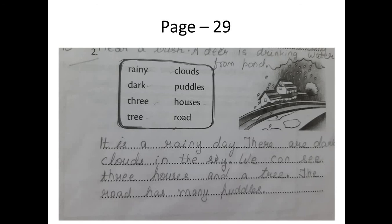Now see the second picture carefully. The options given are: rainy, dark, tree, clouds, puddles, houses, and roof. When doing picture compositions and these words are not given to you, always write down the words that come to your mind when you see the picture, and then frame the sentences. My sentences: 'It is a rainy day. There are dark clouds in the sky. We can see three houses and a tree. The road has many puddles.'